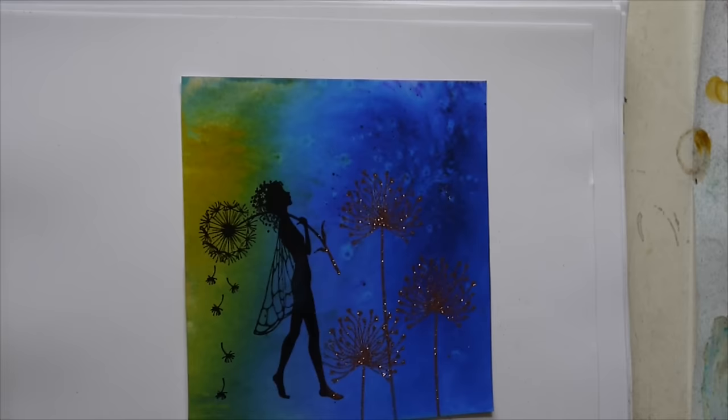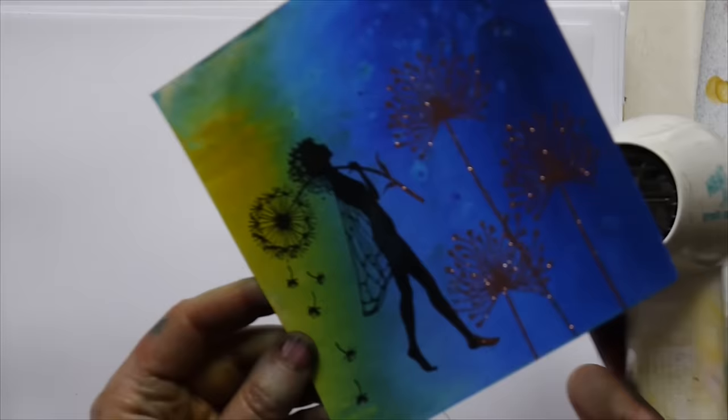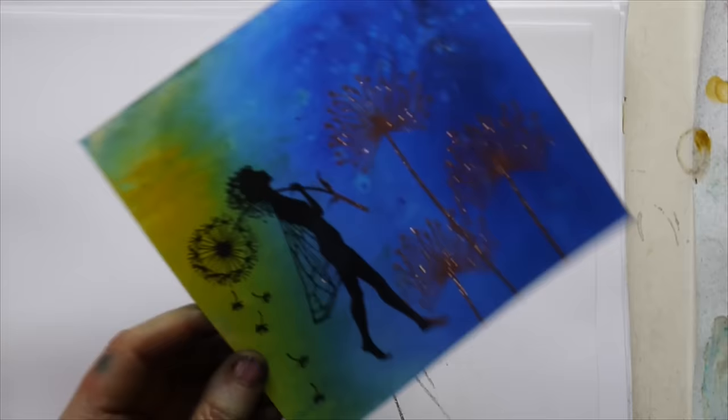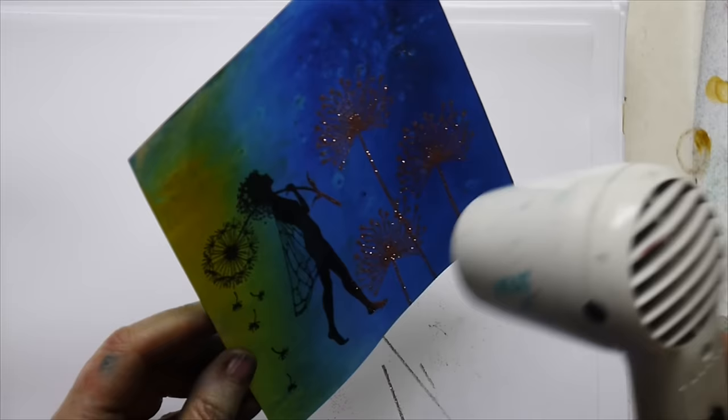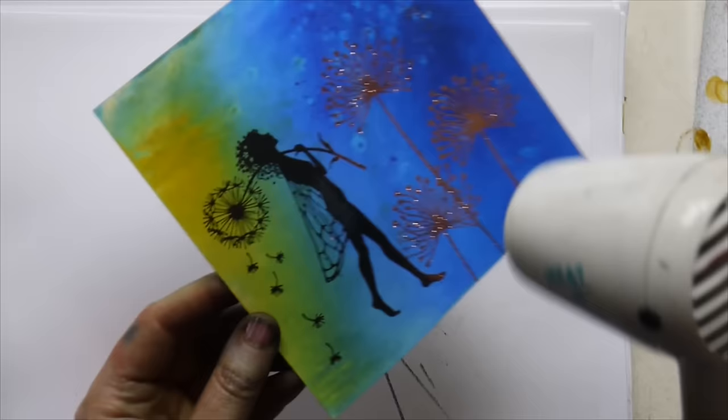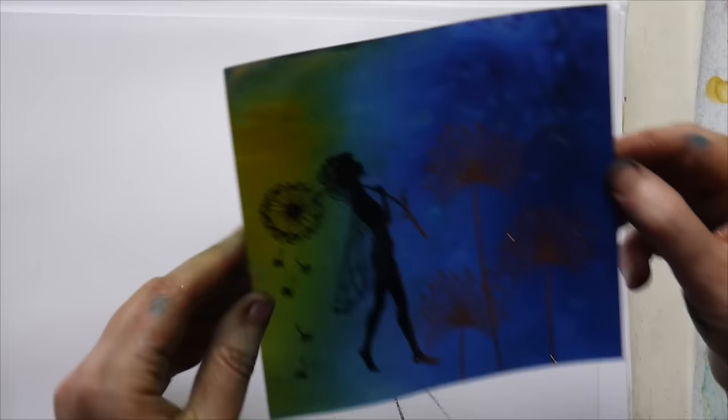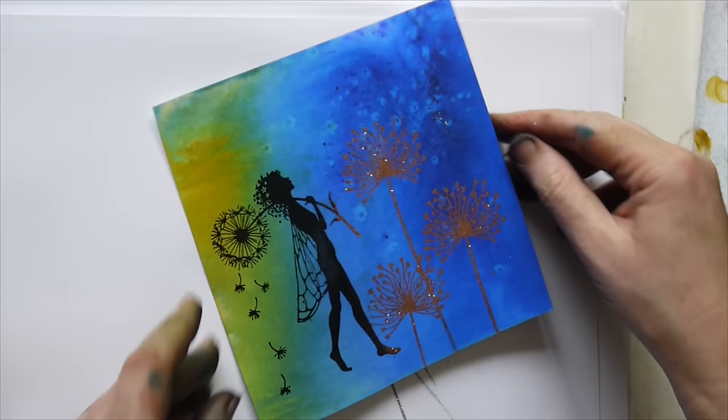Okay. So taking the heat gun now, we're just going to set this. With the card curls just heat underneath, even it out. It doesn't take long. As you can see, it's starting to go now. There we go. I think it looks just stunning against that blue.